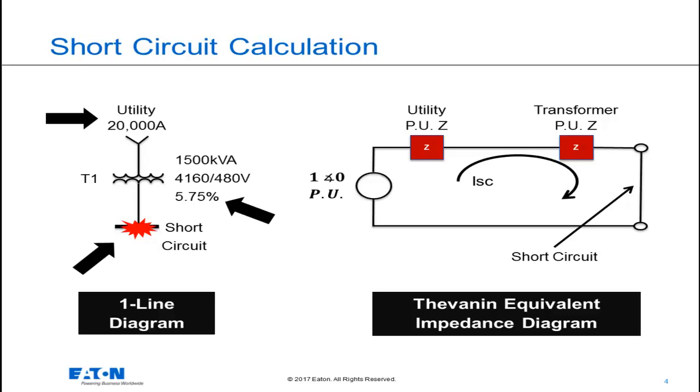The short across the Thevenin equivalent circuit is our short circuit on the bus in the one-line diagram, and that has zero impedance. Remember, we just said it's going to be a bolted fault.